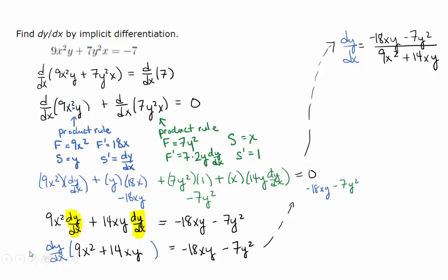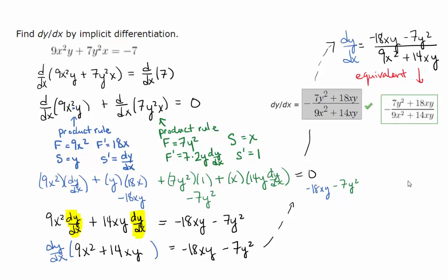Now, this was a problem from WebAssign, and the homework answer that was given was this. How can we see that my answer that I got is actually equivalent? Yeah, they factored out a negative in the numerator. Good. Yeah, they just rearranged the addition here, right? Addition's commutative. It's really the same answer.